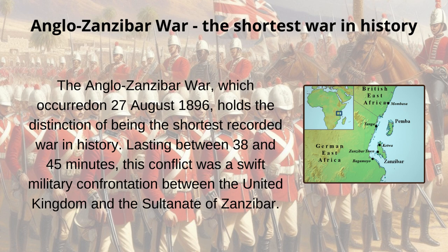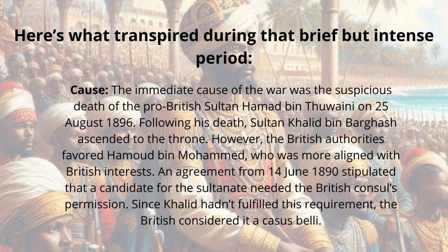The Anglo-Zanzibar War, which occurred on 27th August 1896, holds the distinction of being the shortest recorded war in history. Lasting between 38 and 45 minutes, this conflict was a swift military confrontation between the United Kingdom and the Sultanate of Zanzibar.